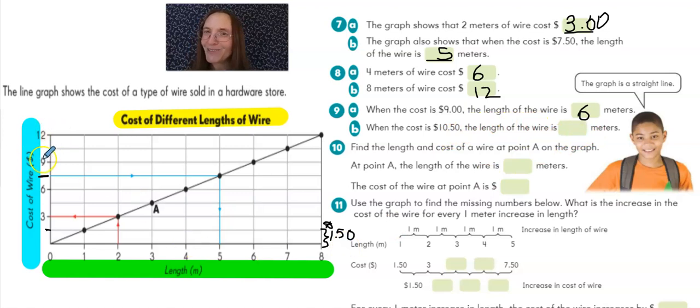Well, it doesn't say ten dollars and fifty cents here, but we already figured out that one vertical space is a dollar fifty. So if I had a dollar fifty to nine dollars, this is where ten dollars and fifty cents would be. I'm traveling along the horizontal line there, then dropping down the vertical axis to find out that would get you seven meters.